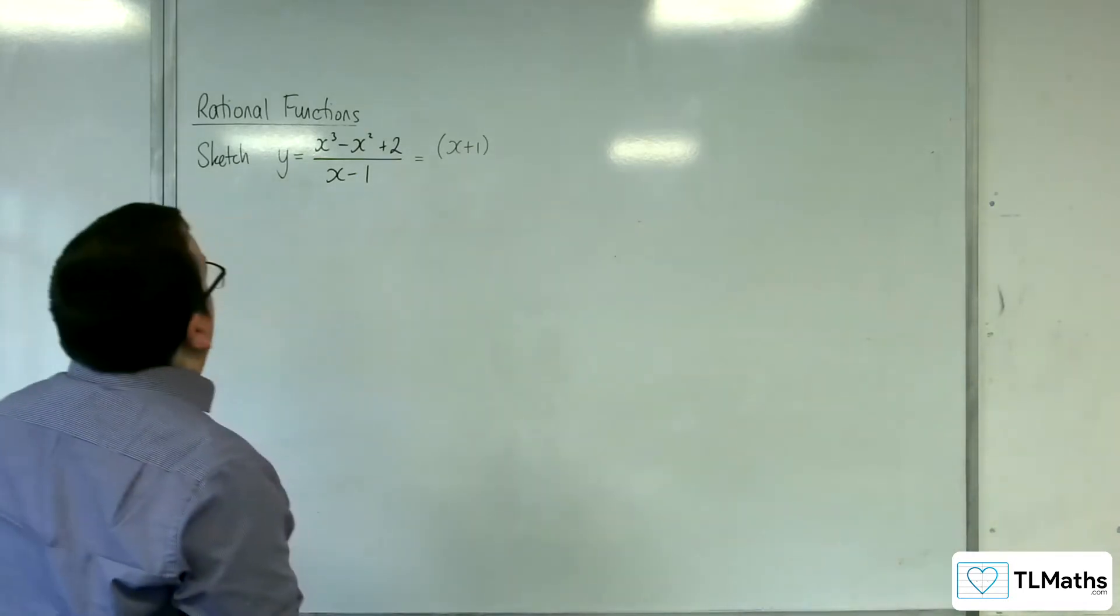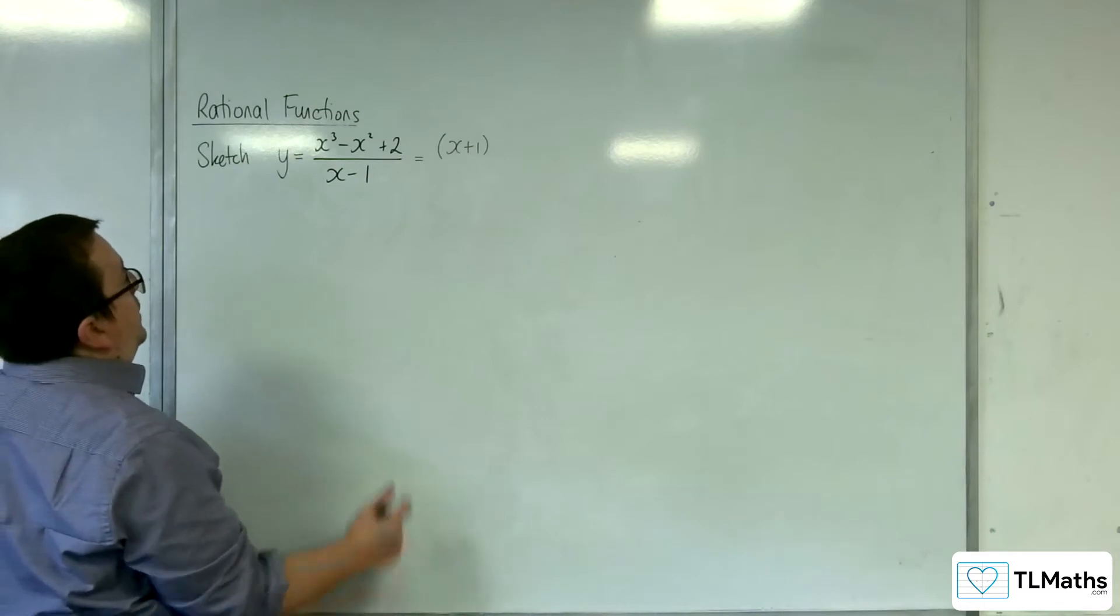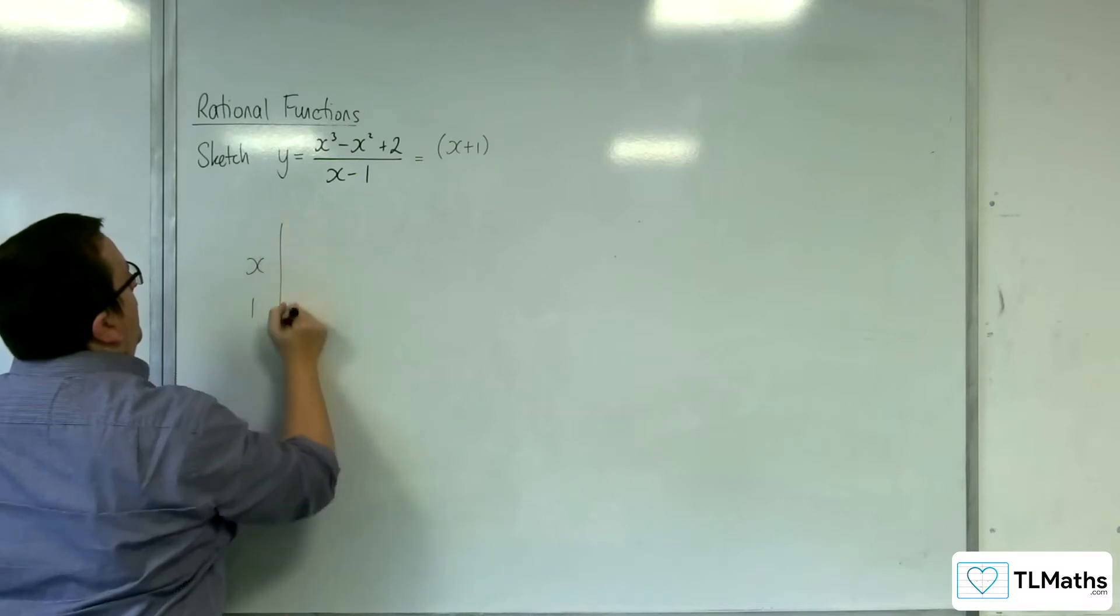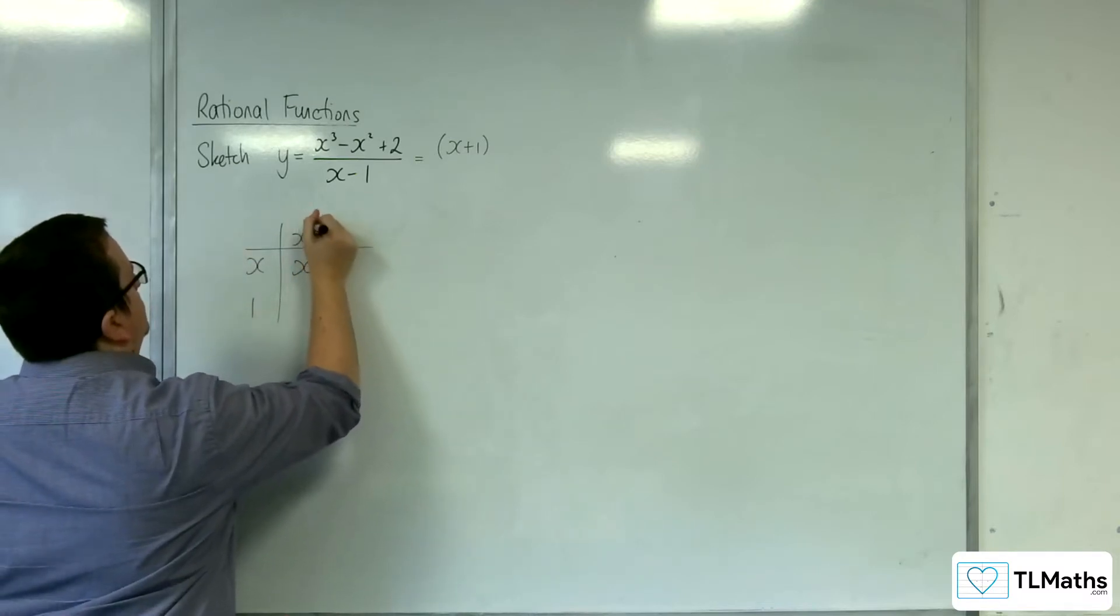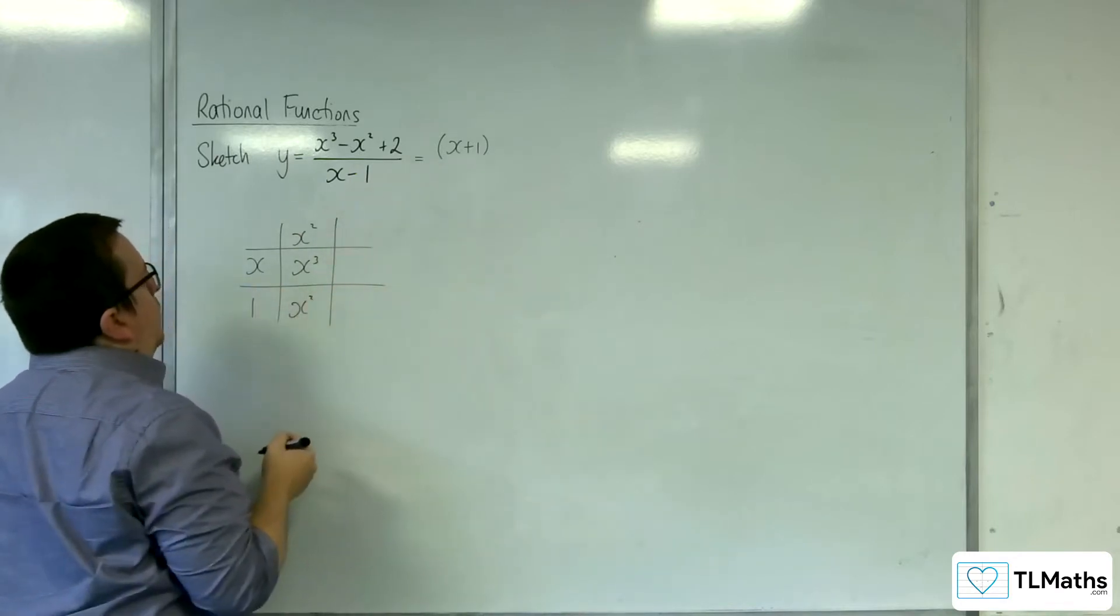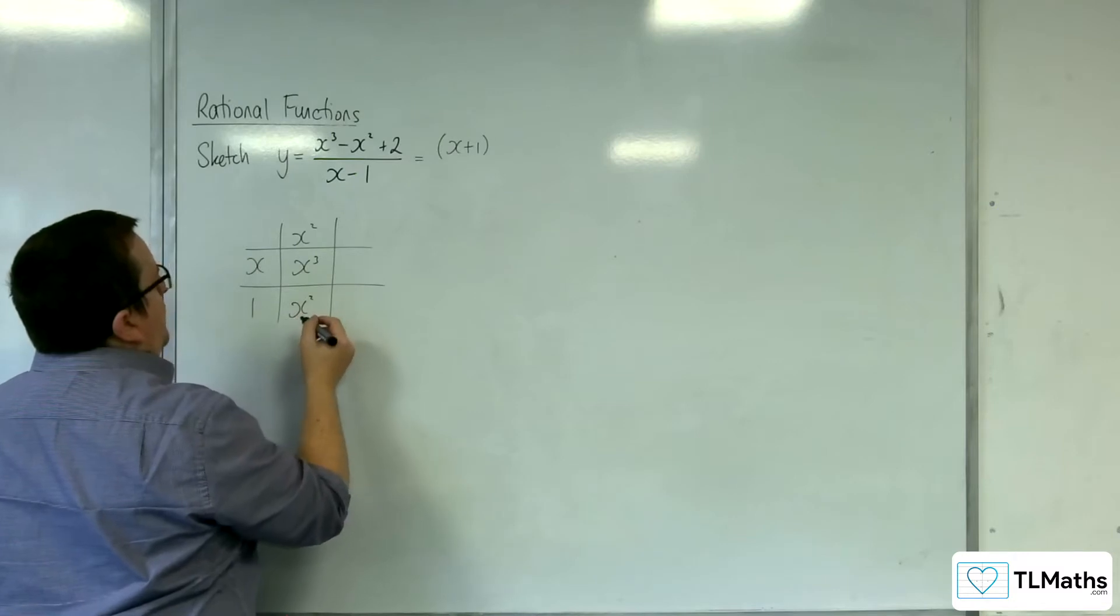So what I'm going to need to do is do a quick little bit of polynomial division just to divide the cubic by x plus 1, just so I can get the quadratic term. I mean I could work it out otherwise, but I'm just going to go through it this way.